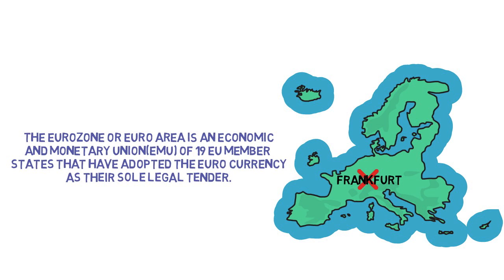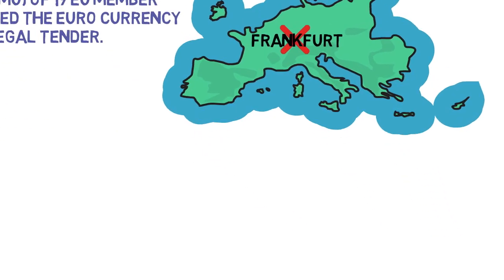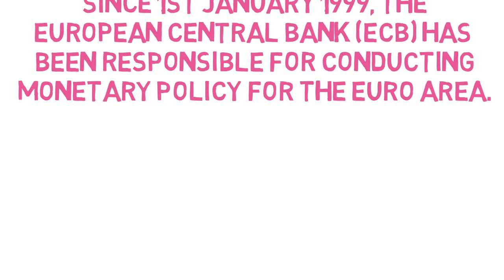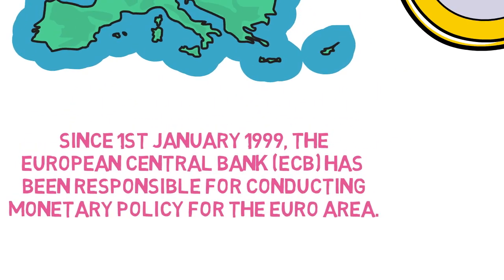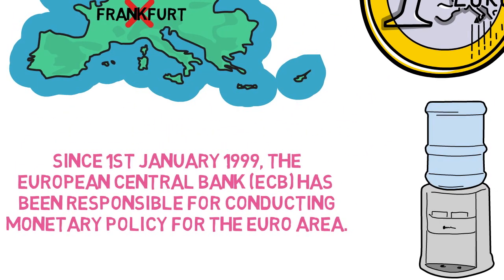The eurozone, or euro area, is an economic and monetary union (EMU) of 19 EU member states that have adopted the euro as their sole legal tender. Some large countries that have stayed out include Sweden, the UK, and Denmark. Since the 1st of January 1999, the European Central Bank has been responsible for conducting monetary policy for the euro area — filtering and controlling the release of money into the system for the 19 countries involved.